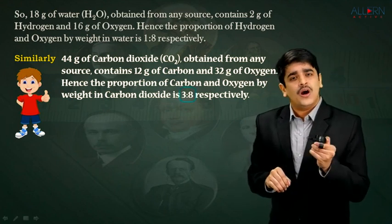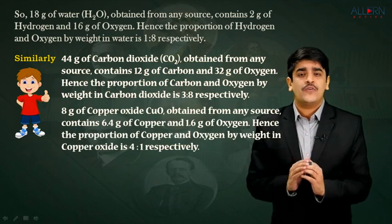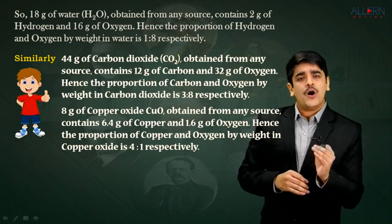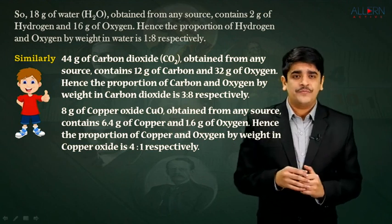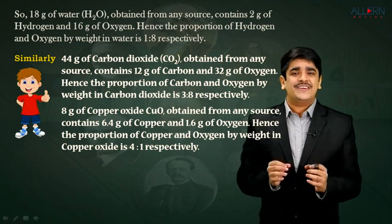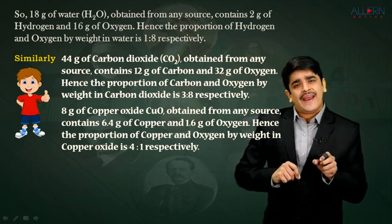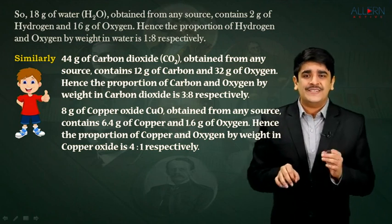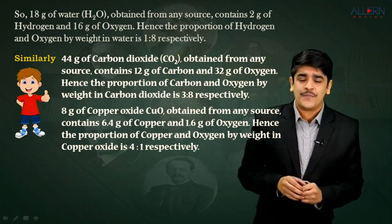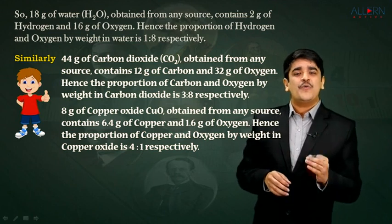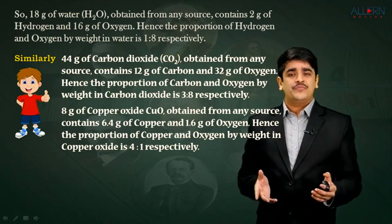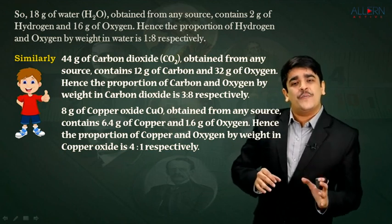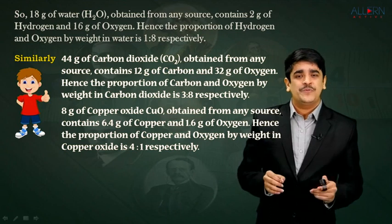Moving ahead, for copper oxide given by the formula CuO, taking exactly 8 grams of copper oxide from any source, the amount of copper within the copper oxide is going to be 6.4 grams and the same copper oxide is going to contain 1.6 grams of oxygen. Hence the proportion of copper and oxygen by weight in copper oxide is exactly 4 is to 1.